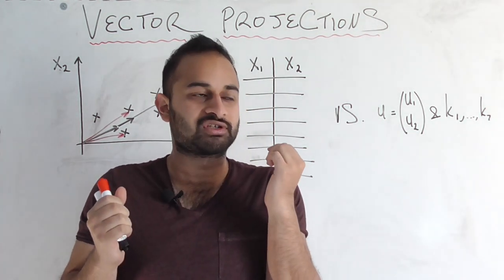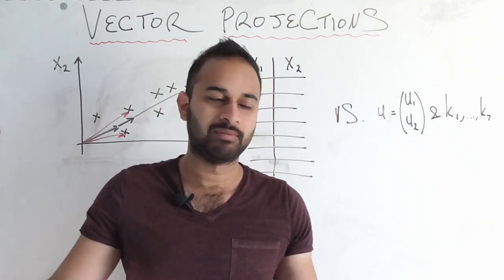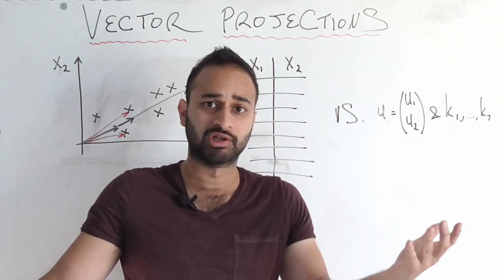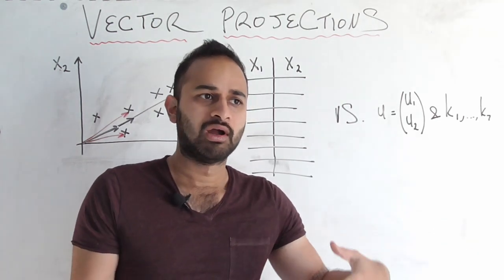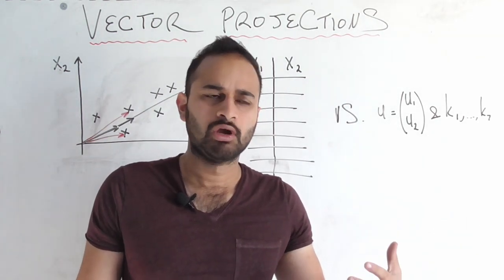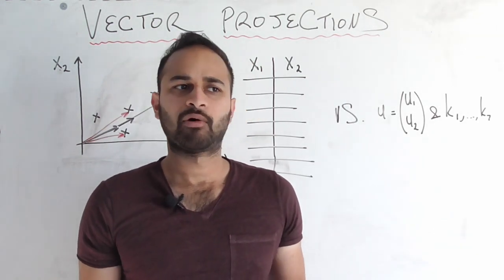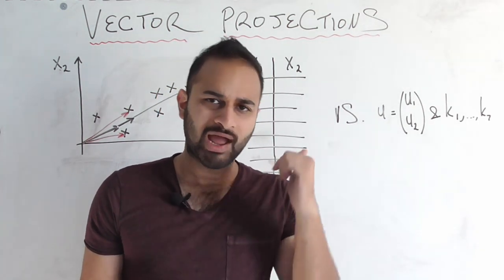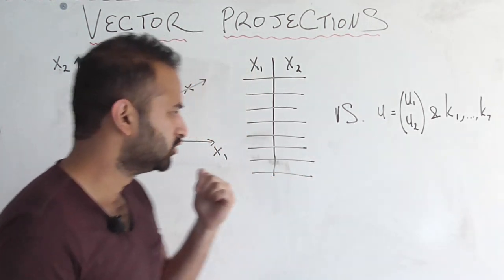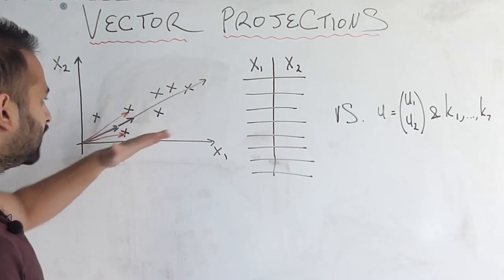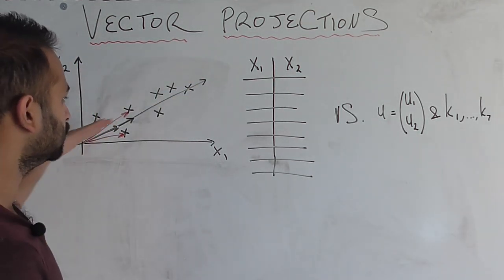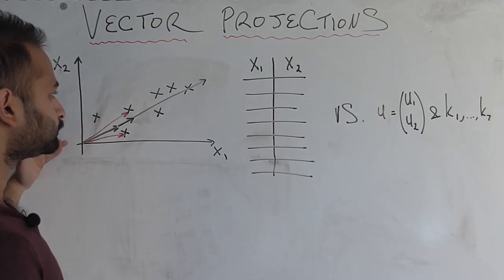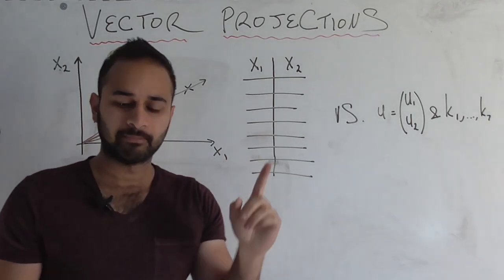Now of course the question is: why would we ever want to do this? Maybe there are applications to physics or we care about literal shadows, but in a more abstract data science context, why do we care about projecting one vector onto another? Well, let's take a look at what happens if we were to successfully project all seven of these original data points onto that black vector we drew.